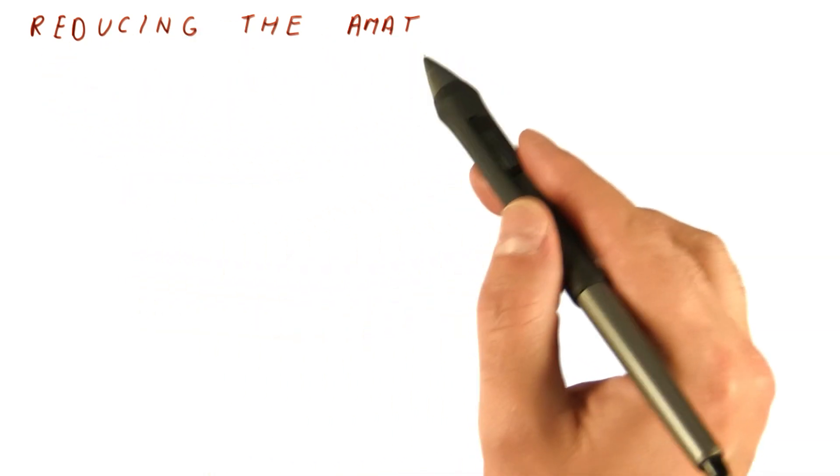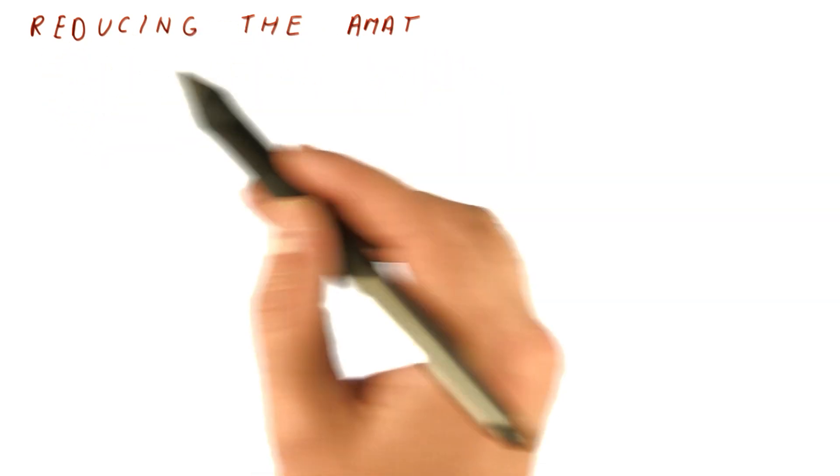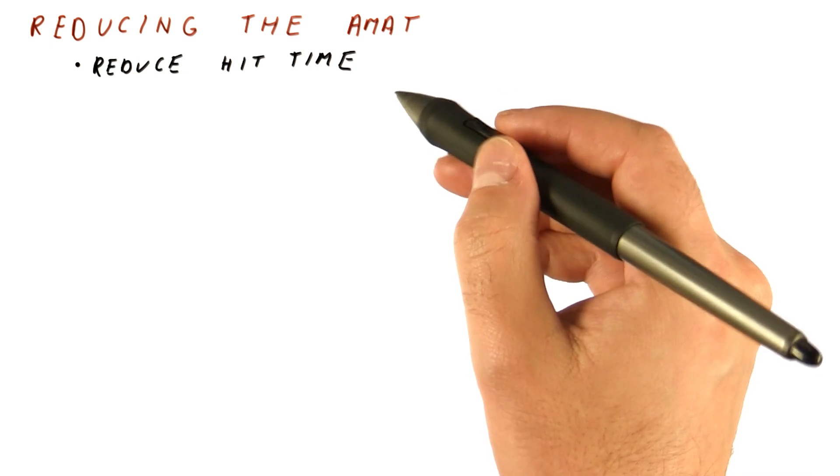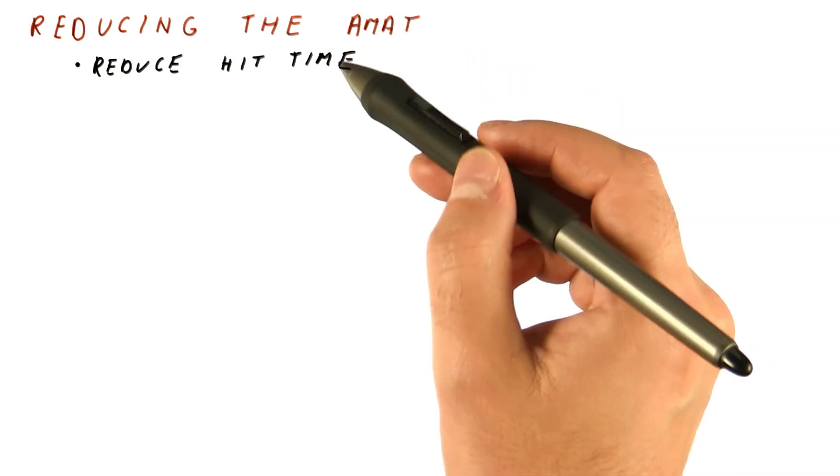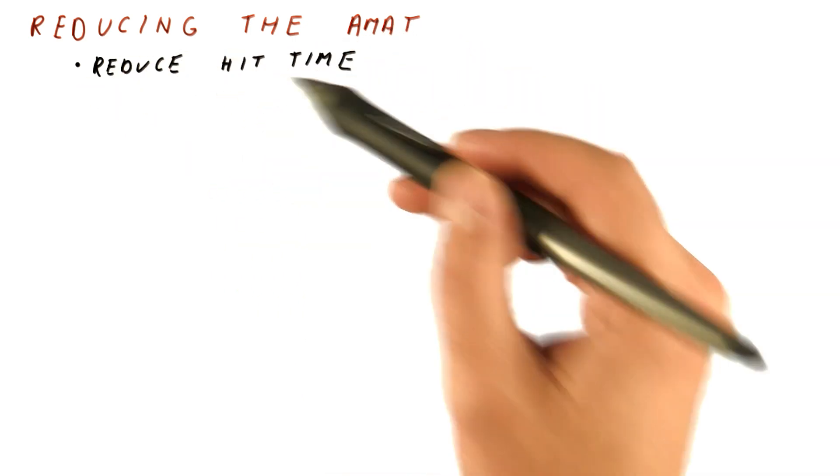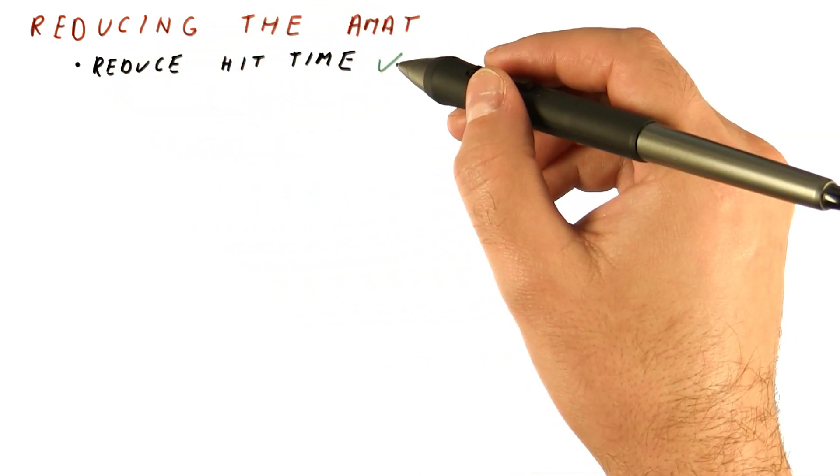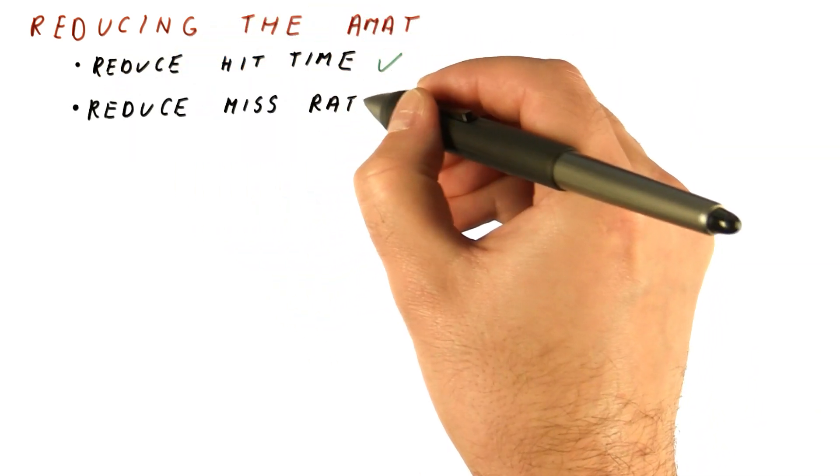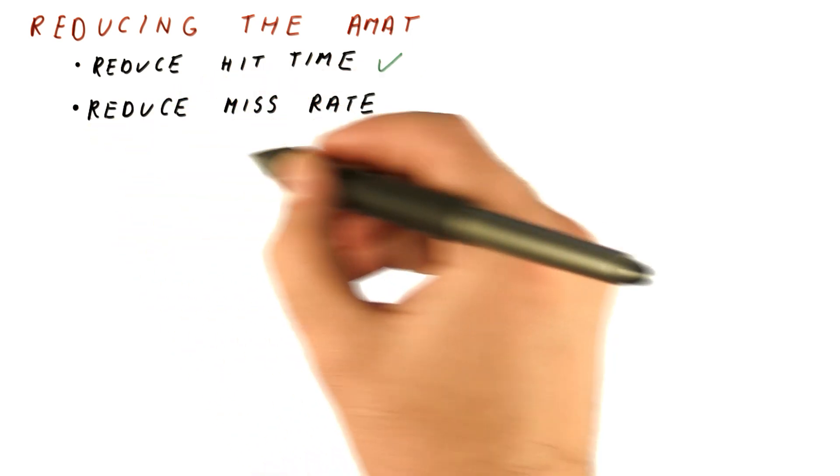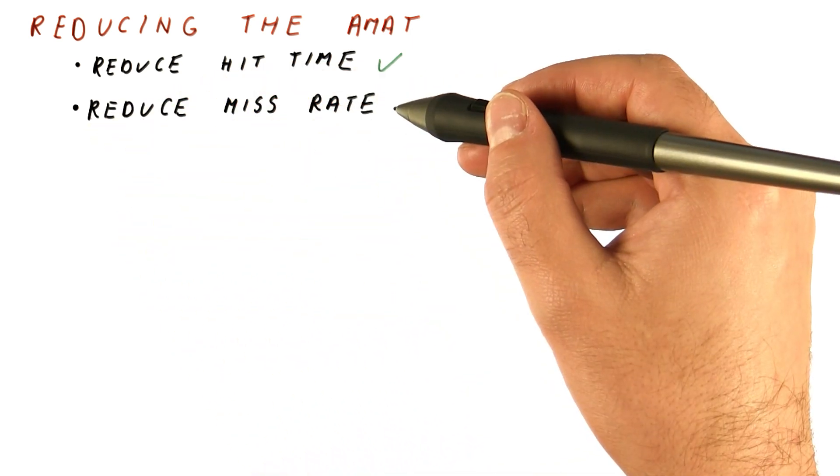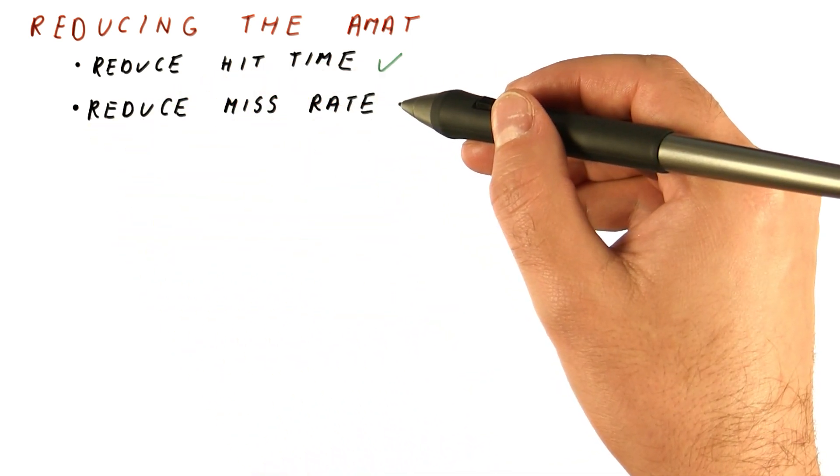Now, let's go back to our cache optimizations, which are about reducing the AMAT. We have seen that AMAT can be reduced by reducing the hit time, and we have seen several techniques that do this. The AMAT can also be reduced by reducing the miss rate, and we will now look at some techniques that try to do that.